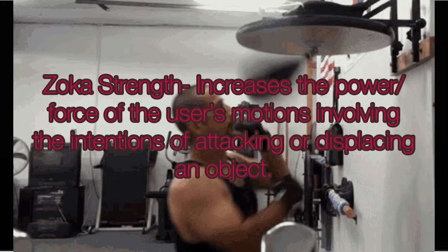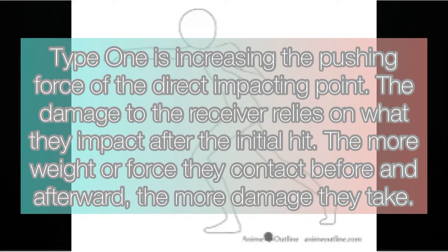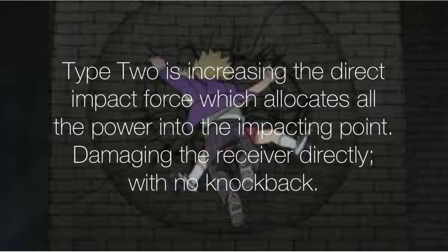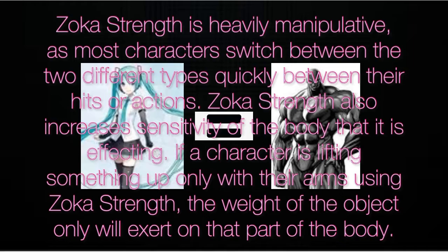Zoka strength increases the power and force of the user's motions involving the intentions of attacking or displacing an object. Type one is increasing the pushing force of the direct impacting point — the damage to the receiver relies on what they impact after the initial hit; the more weight or force they contact before and afterward, the more damage they take. Type two is increasing the direct impact force, which allocates all power into the impacting point, damaging the receiver directly with no knockback. Zoka strength is heavily manipulative as most characters switch between the two types quickly between hits and actions.